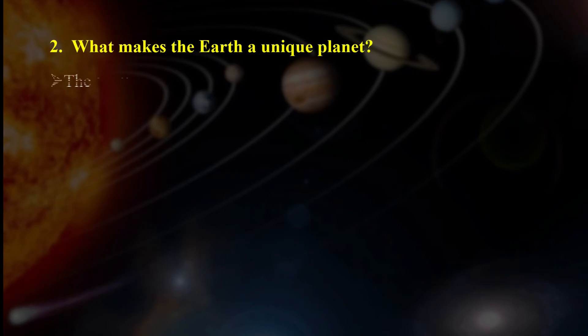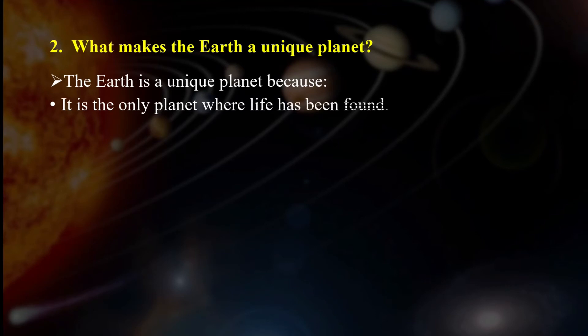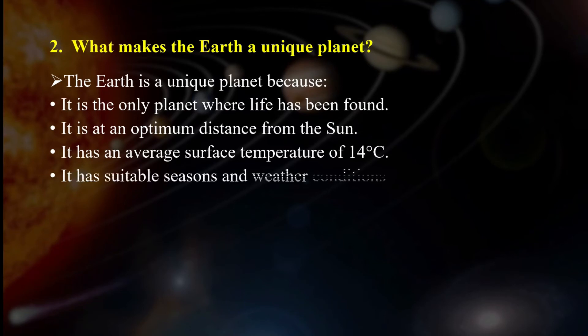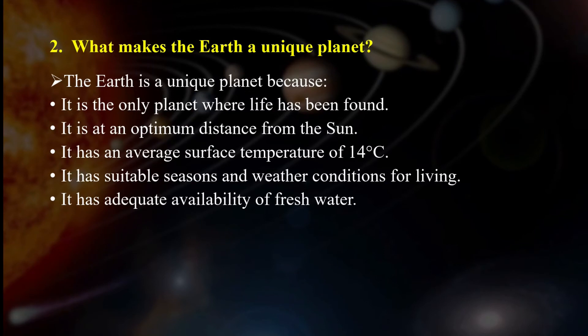Next one, what makes the earth a unique planet? The earth is a unique planet because of the following reasons. Number one, it is the only planet where life has been found. Earth is at optimum distance from the sun. It has an average surface temperature of 14 degrees Celsius. Earth has suitable seasons and weather conditions for living. Earth also has adequate availability of fresh water. Earth has a presence of an atmosphere that protects all the living things from the harmful ultraviolet radiations from the sun.